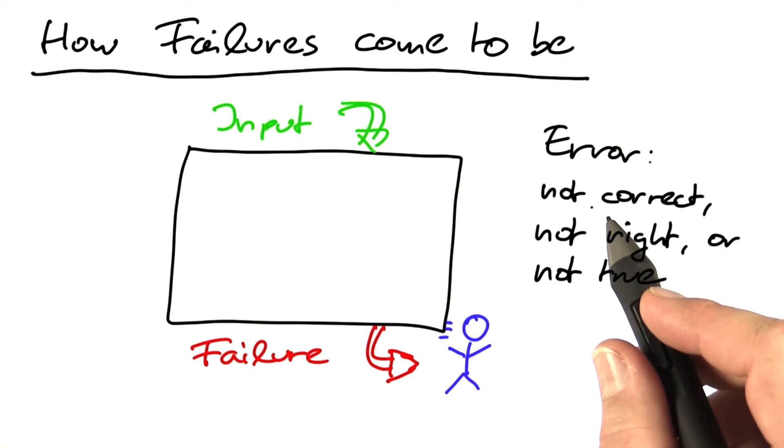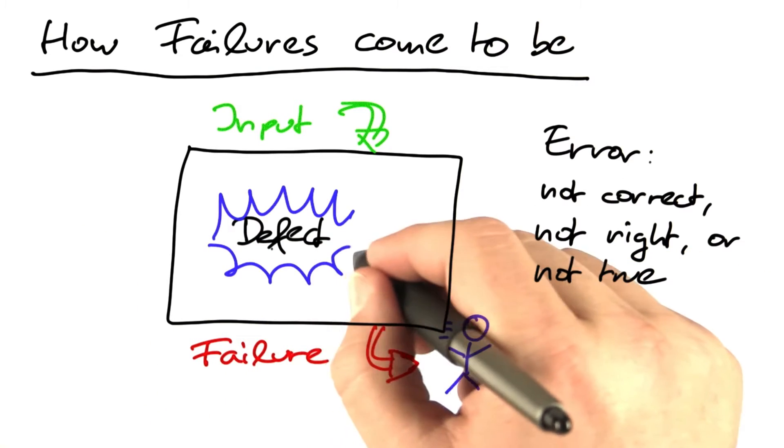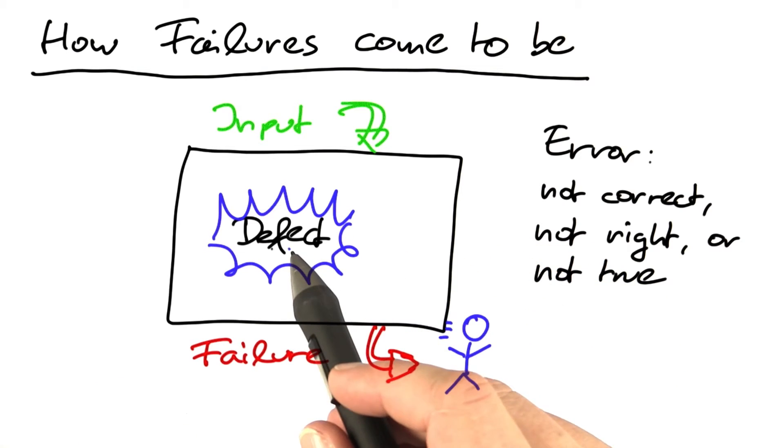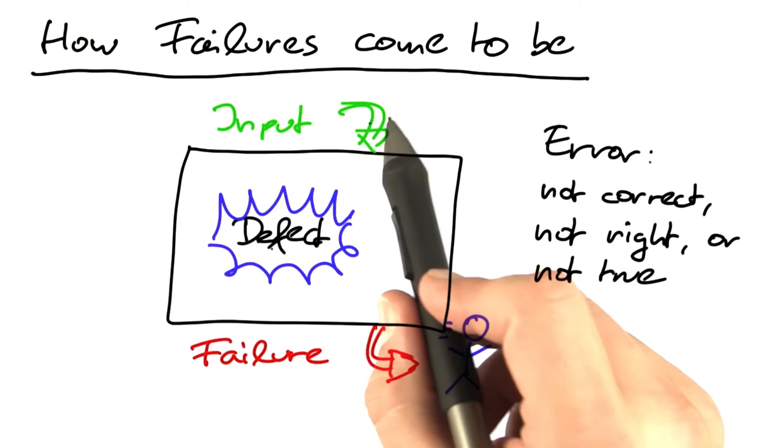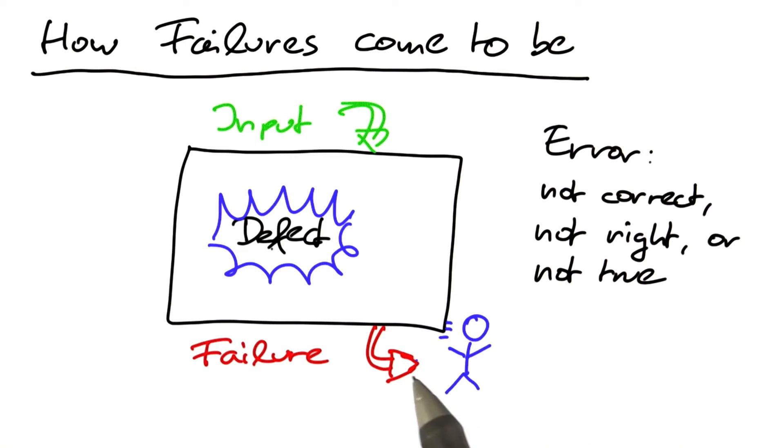Failures are errors. A defect is also an error. A defect, however, is somewhere in the code. The defect is what turns an otherwise valid input in the end into a failure.